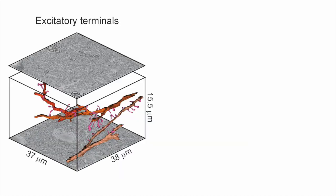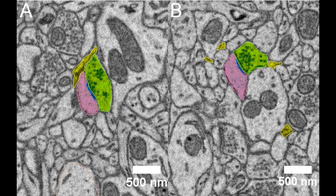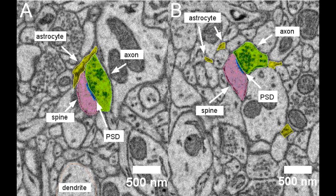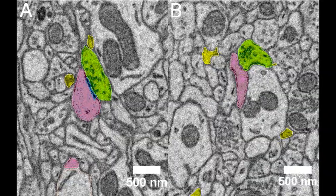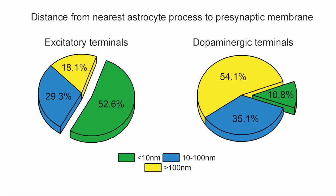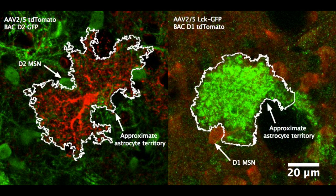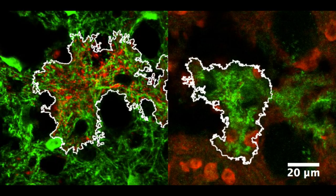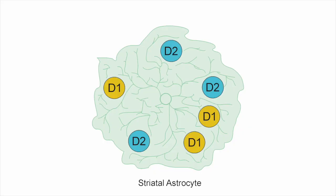We then assessed excitatory inputs and dopaminergic inputs in relation to astrocyte processes by serial block-face scanning electron microscopy. Overall, astrocyte processes were found at a range of distances from synapses, from the most proximate interactions, where astrocyte processes directly opposed presynaptic terminals, to those much further away. When we looked for differences between these striatal inputs, we found that astrocyte processes more closely opposed glutamatergic terminals than dopaminergic terminals, supporting our observations from the NAPA assessments. After we identified how astrocytes contacted synapses, we then determined how striatal astrocytes and neuronal cell bodies were associated.